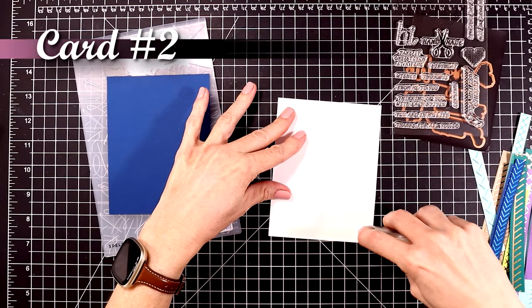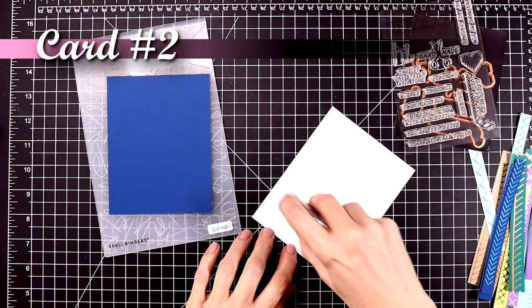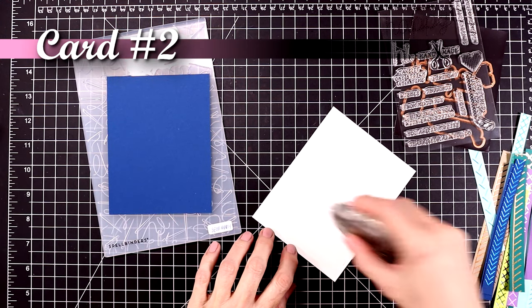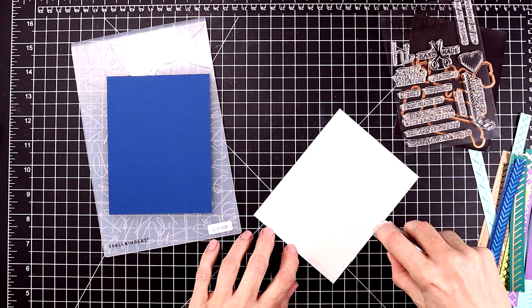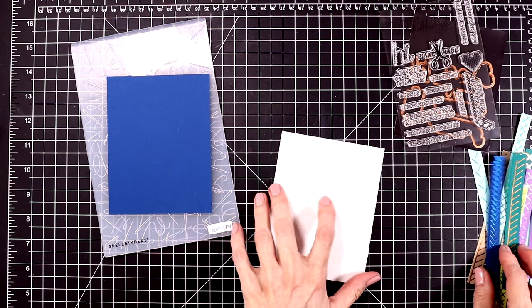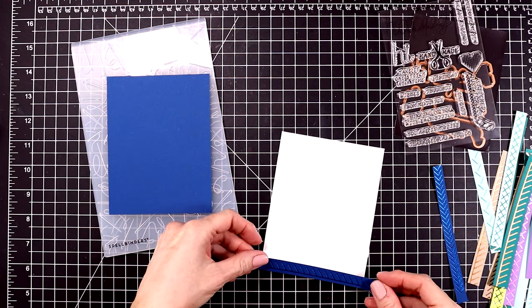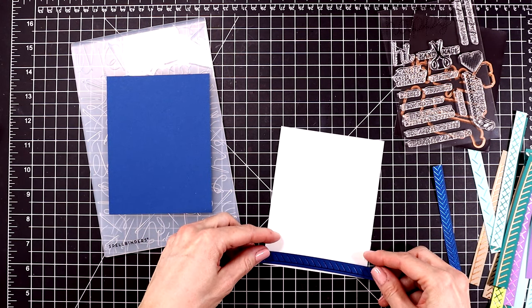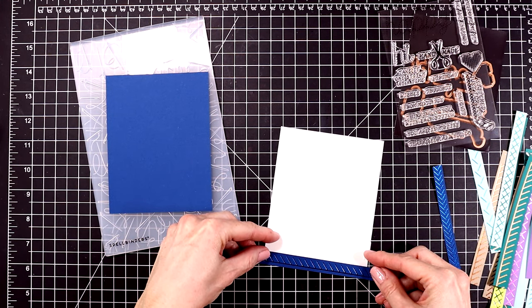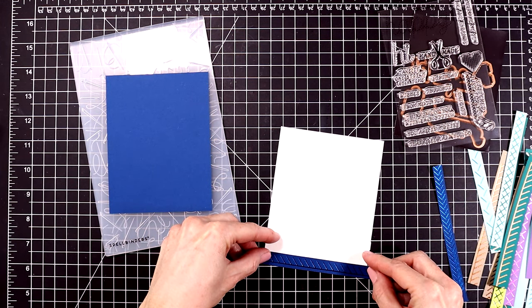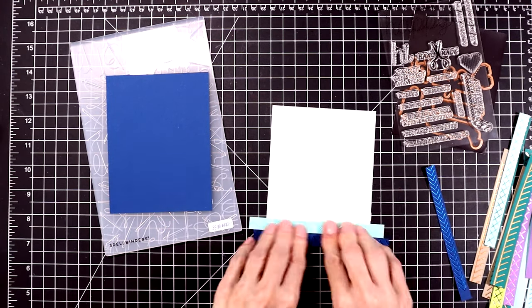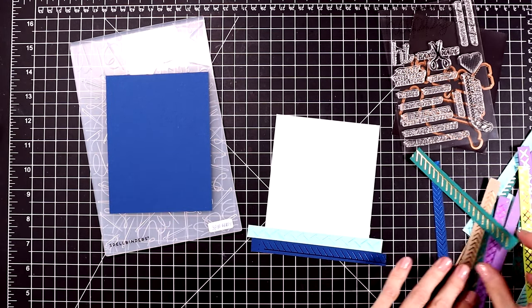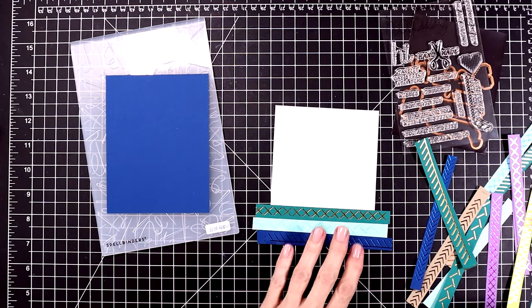For card number two I'm going to be using the 3D embossing folder as well as a bunch of the leftover strips of paper that I cut out. For this card I'm using the ones that I cut out just with my paper trimmer so they don't have the stitch or the dotted detail around them. So these are a little bit thinner and I'm just going to start adhering them down across this panel. I'll speed this up. It's kind of a fun process to do and a fun process to watch.